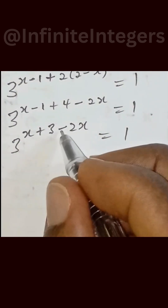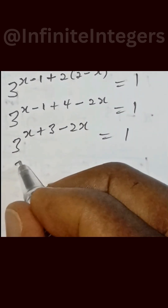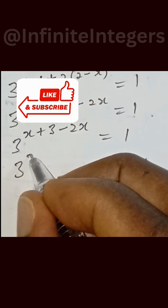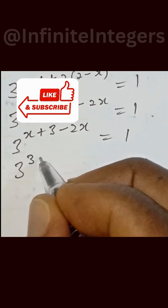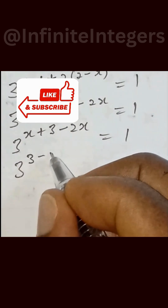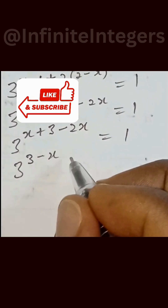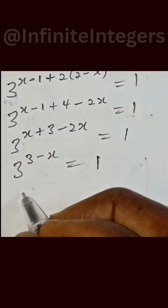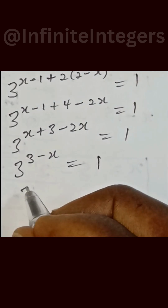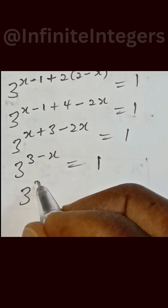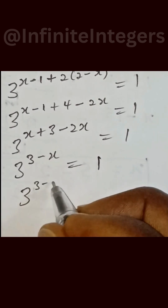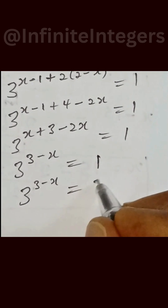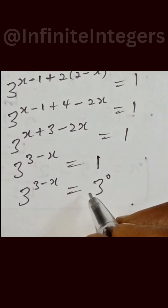So x minus 2x gives us 3 raised to the power 3 minus x, which is equal to 1. And we can write this as 3 raised to the power 3 minus x equal to 3 raised to the power 0.